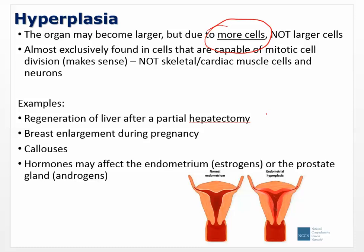Calluses are another example of hyperplasia — increased demand and wearing down turns on genes to produce cells more quickly. Hormones may affect the endometrium or the prostate gland. Estrogens drive the endometrium, and you can see endometrial hyperplasia driven by progesterone and estrogen, which can become out of control. Androgens affect the prostate, which is how BPH (benign prostatic hyperplasia) develops.